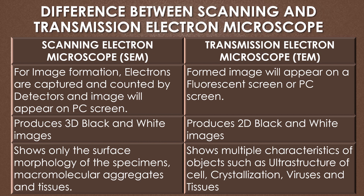The fluorescent screen is present in the TEM but absent in the SEM. The SEM produces 3D black and white images, while the TEM produces 2D black and white images. The SEM shows only the surface morphology of the specimen, macromolecular aggregations, and tissues. The TEM shows multiple characteristics of the cell such as the ultrastructure of the cell, crystallization, viruses, and tissues.